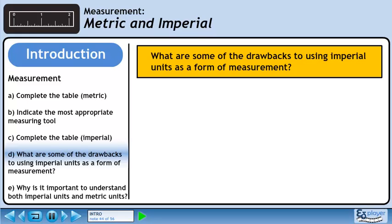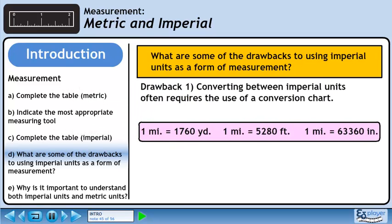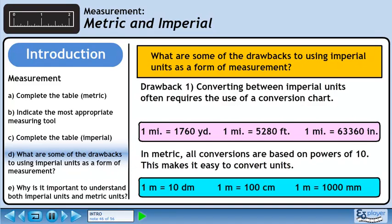In Part D we are asked, what are some of the drawbacks to using imperial units as a form of measurement? Drawback number 1 is that converting between imperial units often requires the use of a conversion chart. In metric, all conversions are based on powers of 10. This makes it easy to convert units.